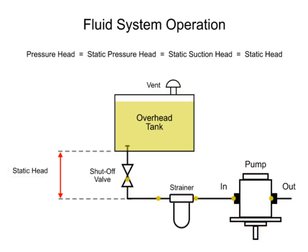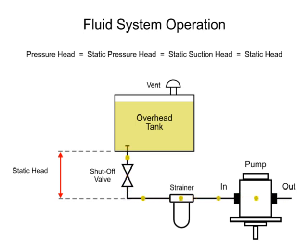This creates a positive inlet pressure and helps fluid flow to the pump. Most pumps will tolerate only a small amount of positive inlet pressure, usually less than 15 PSI, so elevation of the reservoir should not exceed 10 to 15 feet above the pump.